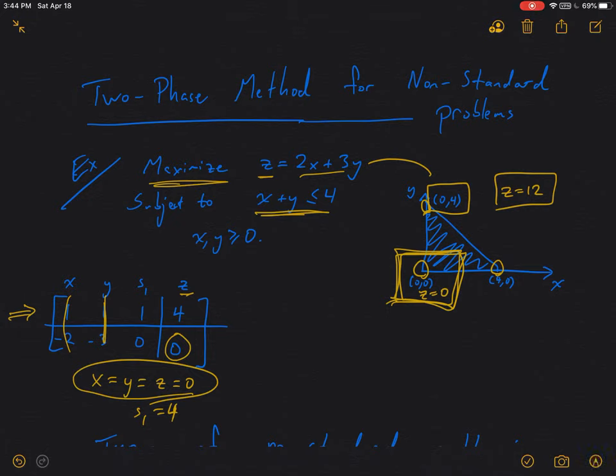And it turns out that in these standard simplex method problems, this is geometrically where we're always starting. So you can always read off the value of x1, x2, and so on, and read off the corresponding value of z will all be 0 at the initial simplex tableau. And that's because the simplex method, by default, is essentially starting at this corner.